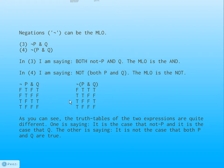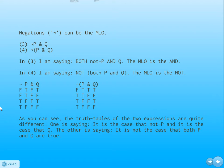Negations can be main logical operators. In sentence three, the main logical operator is AND — I'm saying both 'not P' and 'Q' are the case. In sentence four, the main logical operator is NOT — I'm saying it is not the case that both P and Q. The truth tables for these two sentences are different, reflecting that they say quite different things.